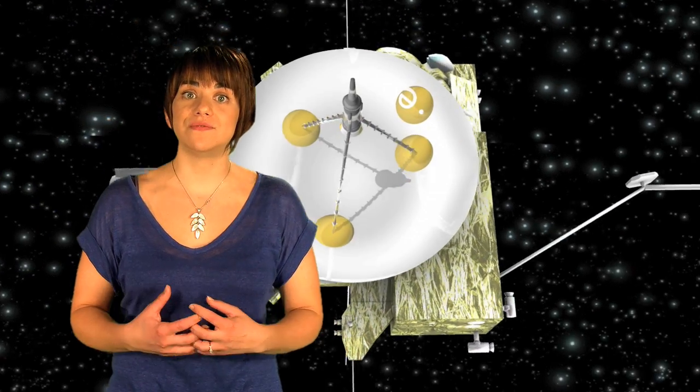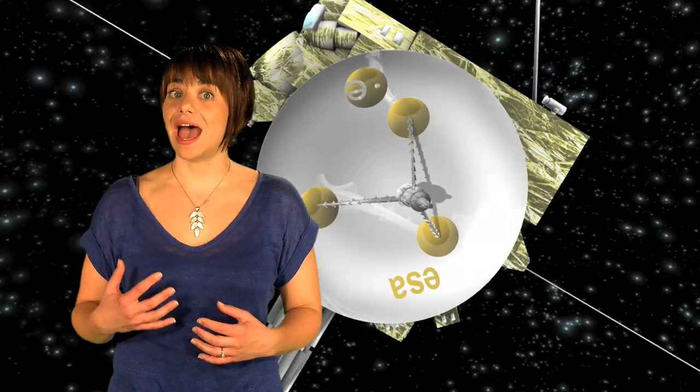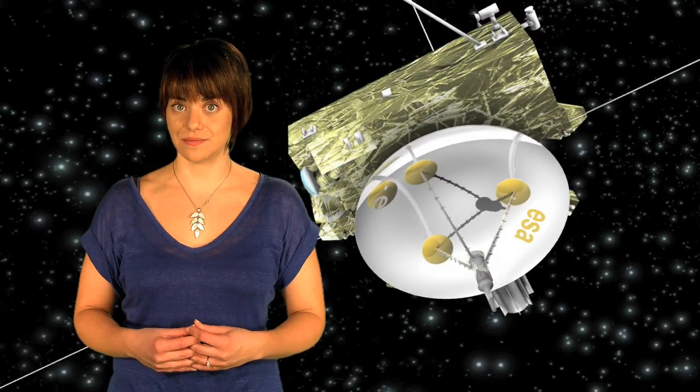Ulysses was launched in 1990 on a five-year mission to become the first spacecraft to study the unknown environment of space above and below the poles of the Sun. In order to get into its unique orbits around the solar poles, Ulysses had to perform a slingshot maneuver around Jupiter. When the mission ended in 2009, it had orbited the solar poles three times, providing a view of the Sun never seen before.